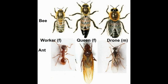Colonies consist of female queens, female workers, and male drones. Ant and bee colonies are societies that have division of labor, communication between individuals, and an ability to solve complex problems.